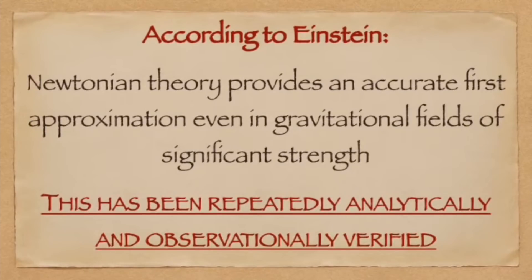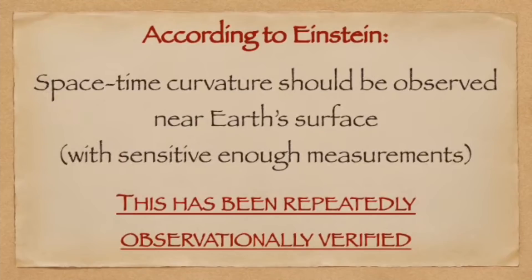Einstein considered Newtonian theory to be the natural first approximation to general relativity, even in settings with reasonably strong gravitational fields. The validity and accuracy of the Newtonian approximation has been analytically and observationally demonstrated many times. Any claim that Newtonian gravitational theory has been superseded or made redundant by general relativity is based on colossal ignorance of the scientific literature. Einstein's claim that space-time is curved has also been observationally demonstrated many times using different techniques — any claim that the curvature of space-time has not been demonstrated is a blatant falsehood.